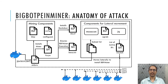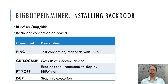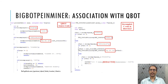Now let's look at techniques used by BigBotPen Miner. First, it installs the backdoor and opens connections with the attacker's C2 server on port 81. The attacker uses a set of commands to control execution in the victim container. From the decompiled code of the backdoor, we observe that it has a close resemblance with the publicly available source code of the QBot malware.